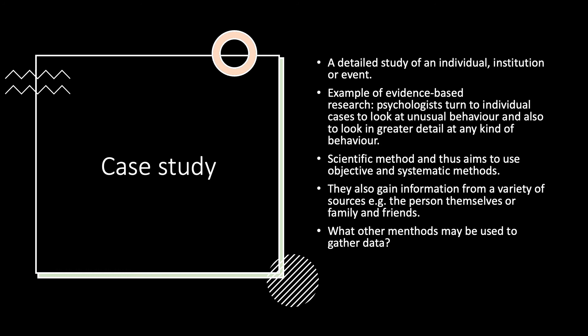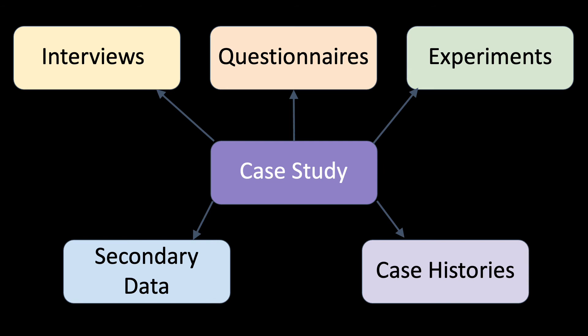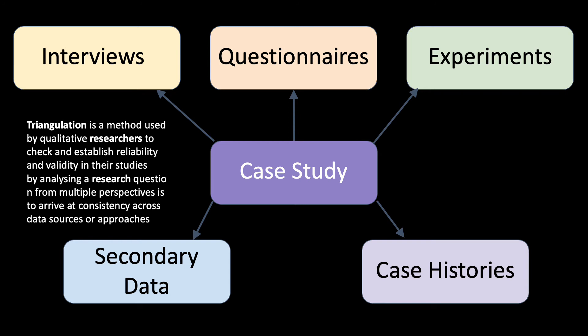What other methods can be used to gather data in case studies? All of these methods and more are used: interviews, questionnaires, experiments, case histories, and secondary data. A key strength of case studies is the concept of triangulation, where researchers use a variety of qualitative techniques to establish the reliability and validity of their research. If they get similar results from their interviews, questionnaires, experiments, and secondary data, it means results are reliable because you've found consistent findings across all these different research methods.